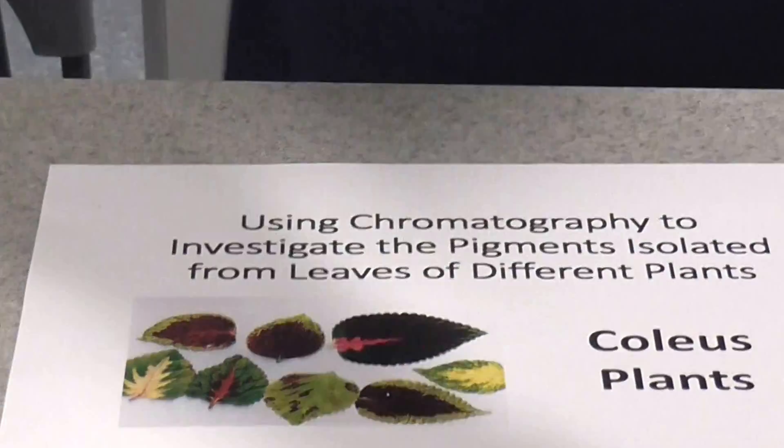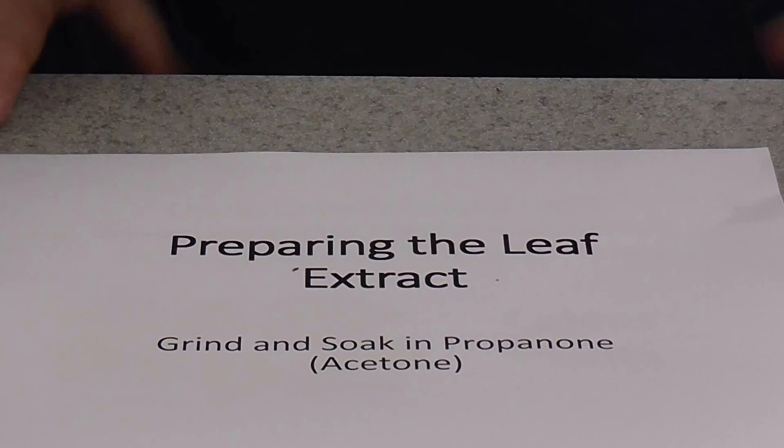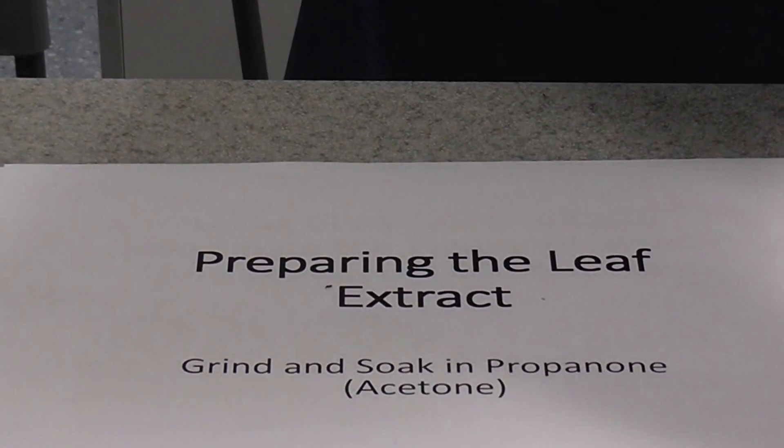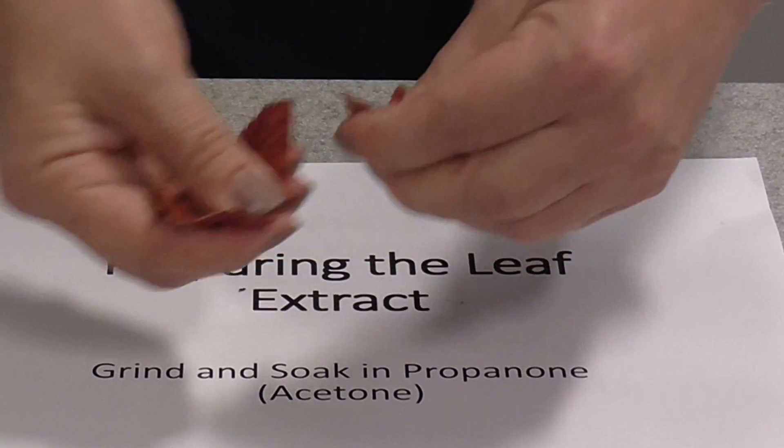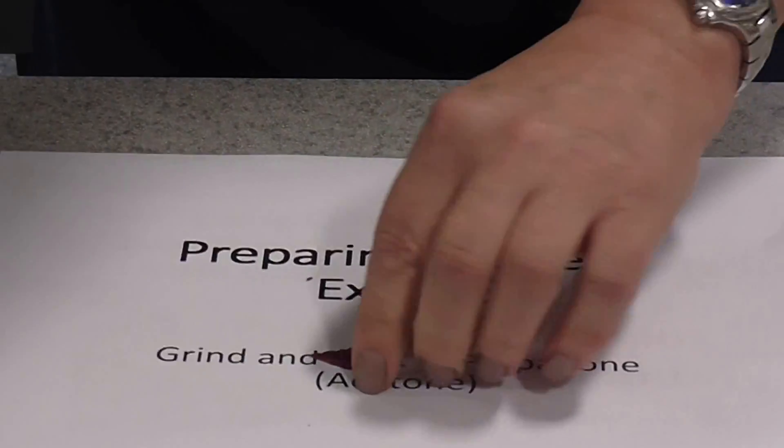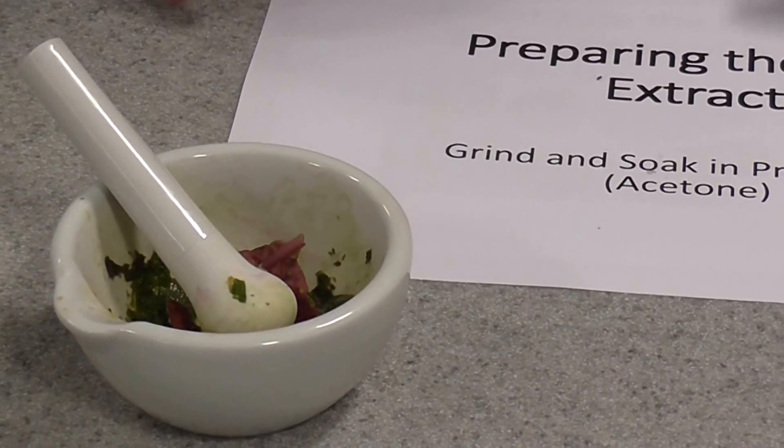Now then, the first thing that you need to do here is to actually prepare a leaf extract. And to do this, you're going to take a couple of little leaves off your plant, whatever you've chosen. I've got coleus leaves here. Tear them up and put them in a mortar there. Okay, now you can see I've already been doing this.